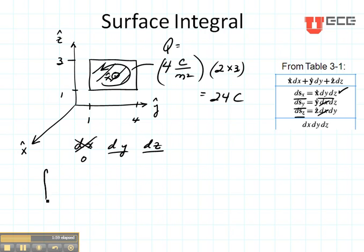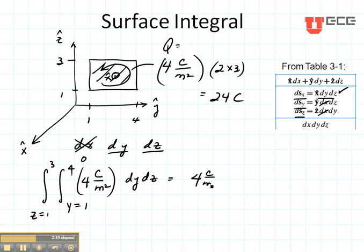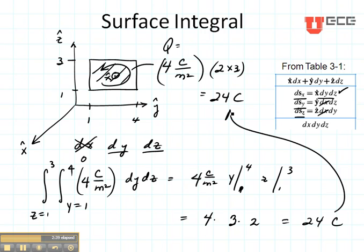So let's do our surface integral. The surface integral is going to be a double integral. Put our function, four coulombs per meter squared here, and DY DZ. Y is going to vary from one to three. When I do my integration I'm going to have four coulombs per meter squared, Y from one to four, Z from one to three, which is going to give me four times three times two, and that's going to give me the 24 coulombs that I had before, agreeing with my previous result.